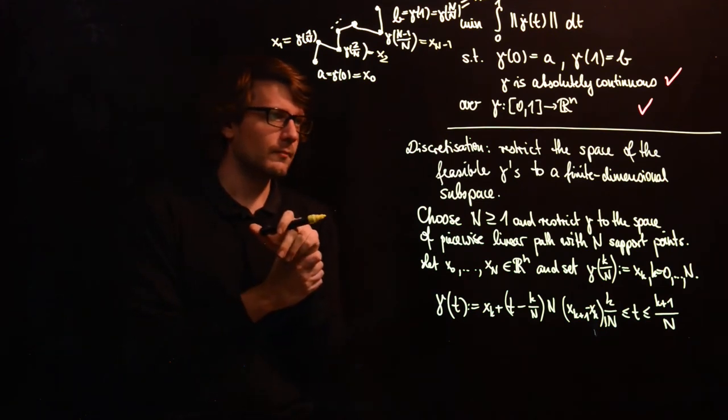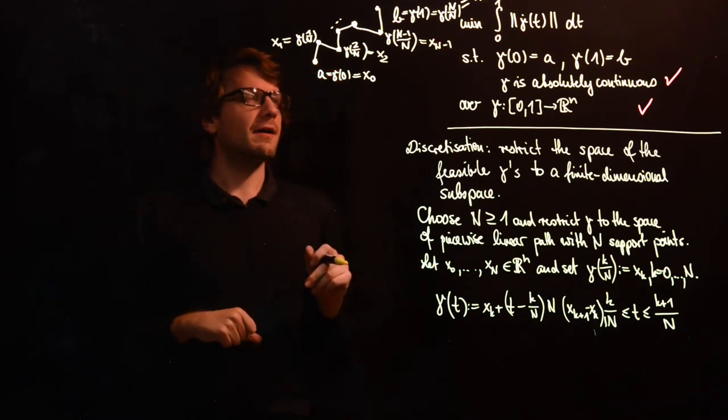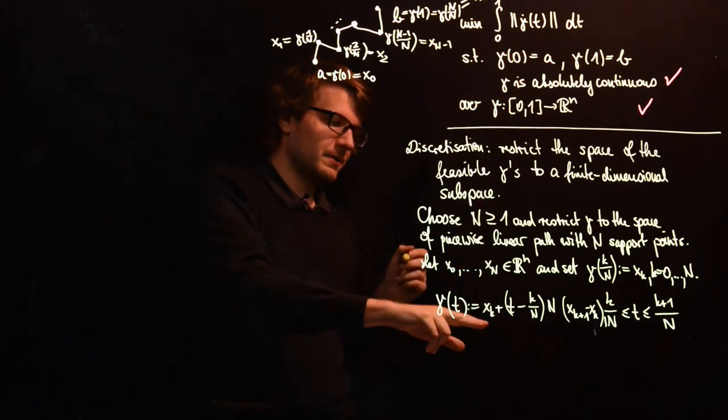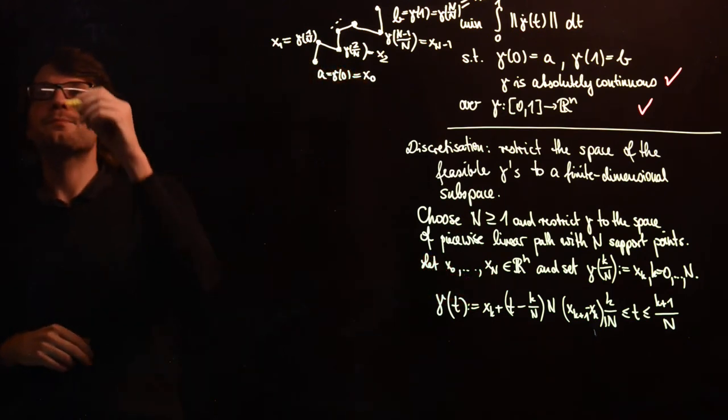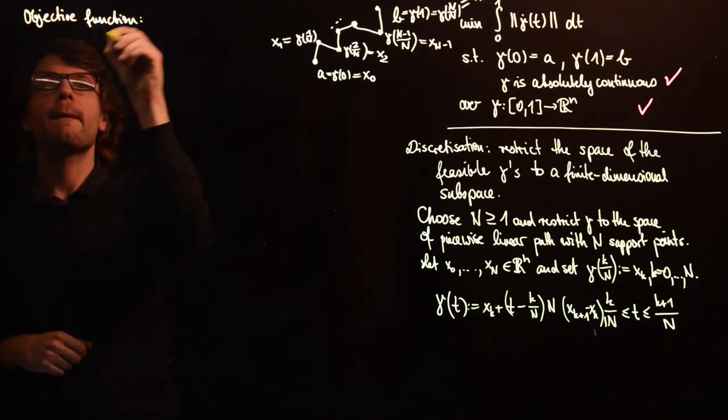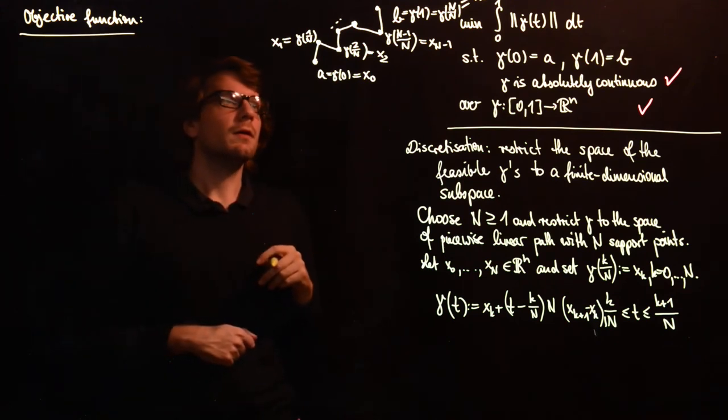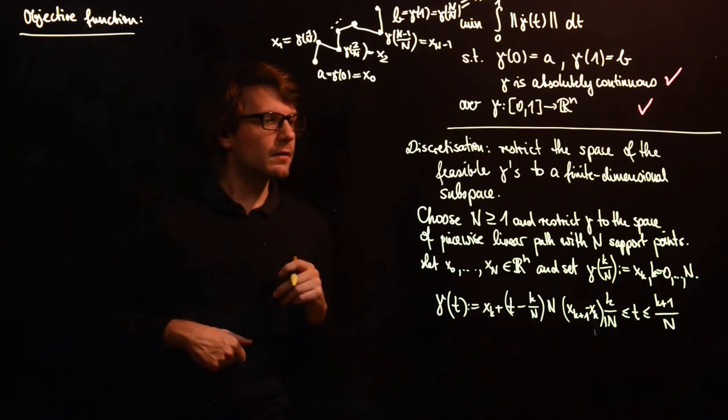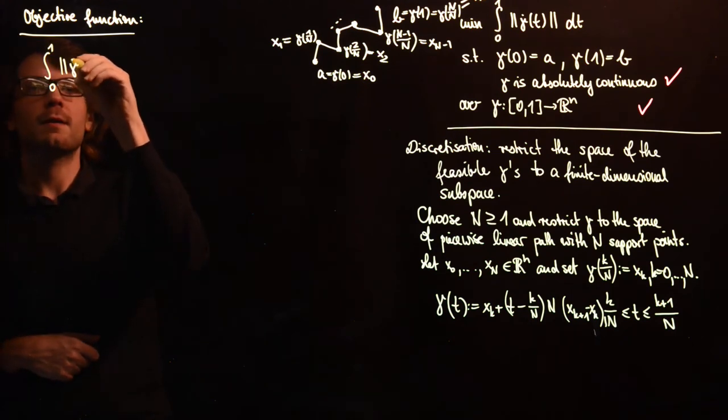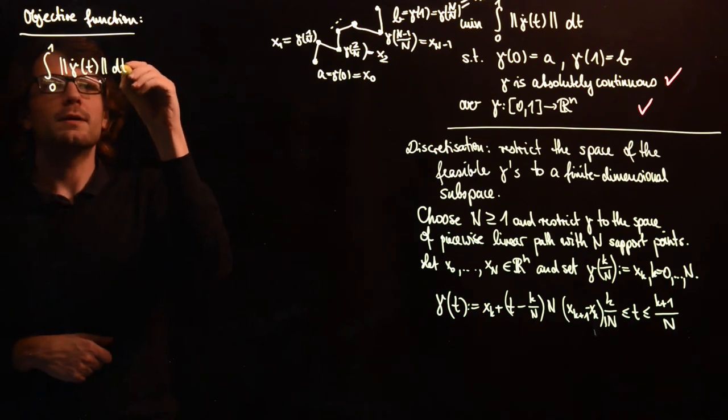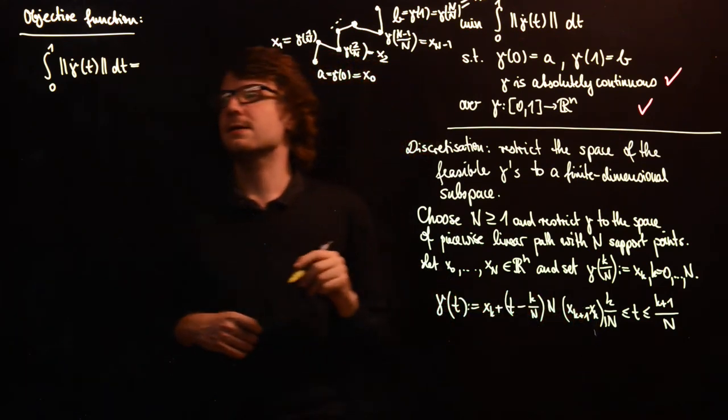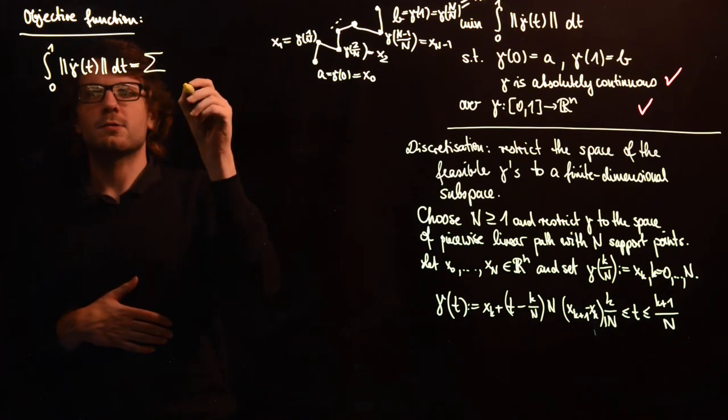And now we have to take care of the objective function. So what is the objective function if we express it in terms of x0 to xn? Let's calculate this. So integral 0 to 1 of gamma dot of t dt. It seems very convenient since we have defined this piecewise, that we just split up this integral.